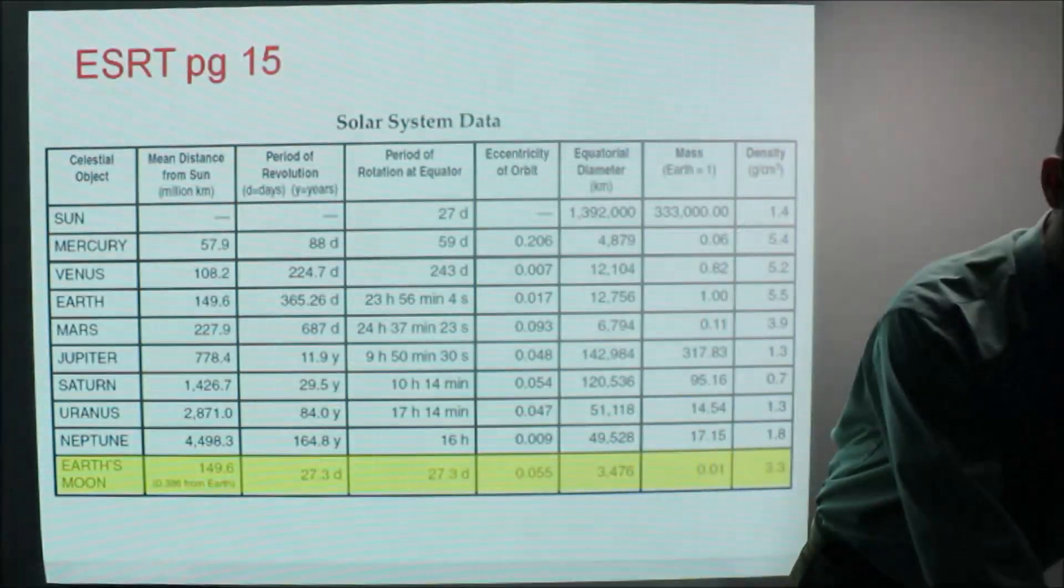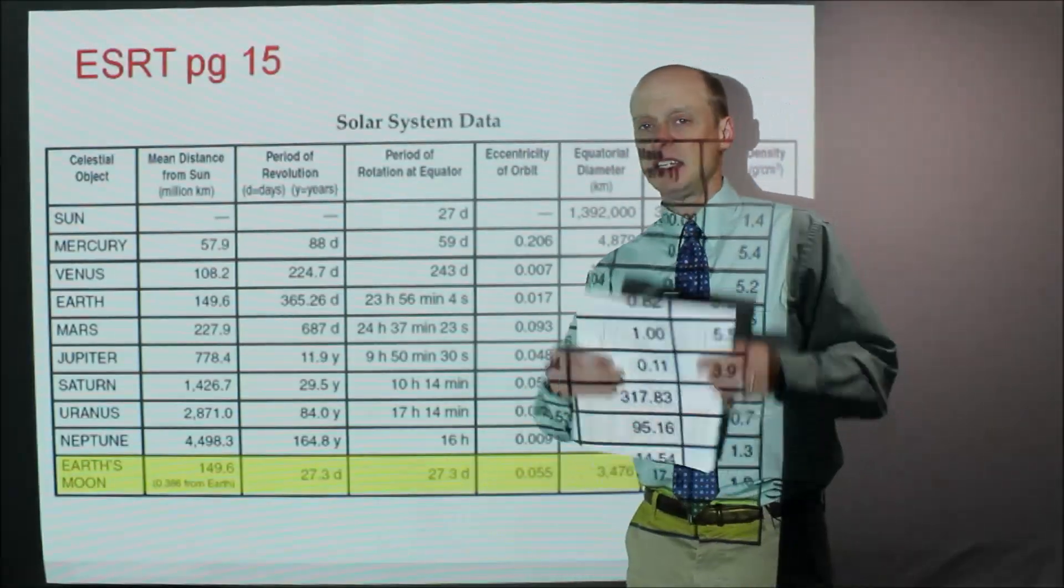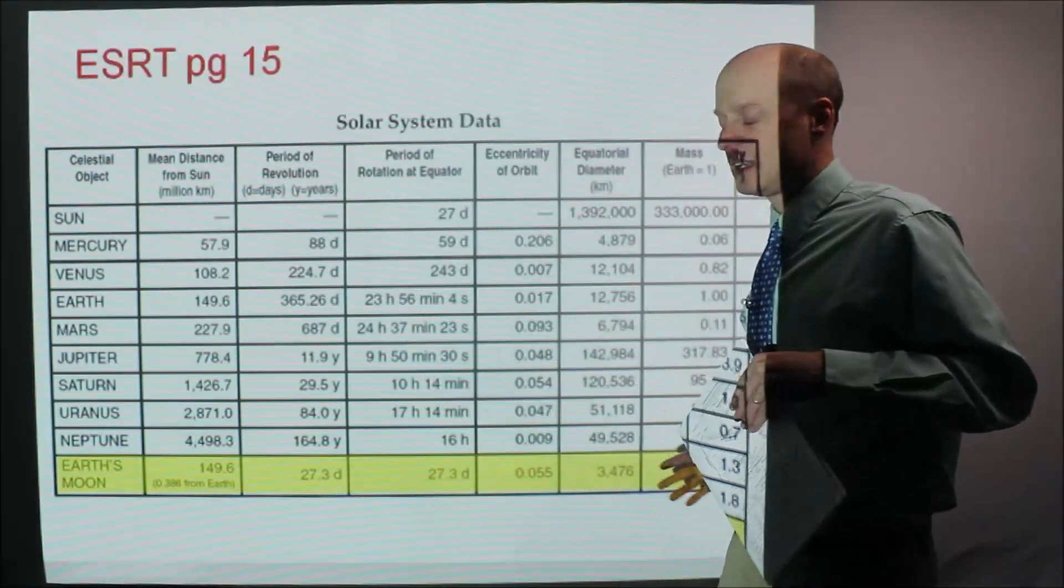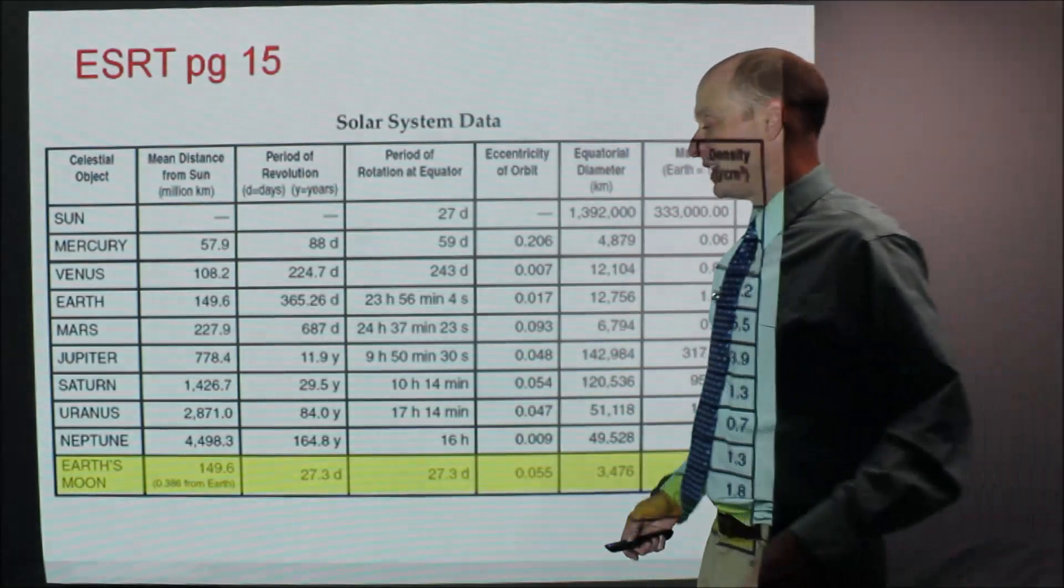Where you're going to see the information that you're given about the moon is on the reference table, page 15 at the bottom. It looks like this. I highlighted in yellow the line that's on the moon. So let's look a little closer at this.